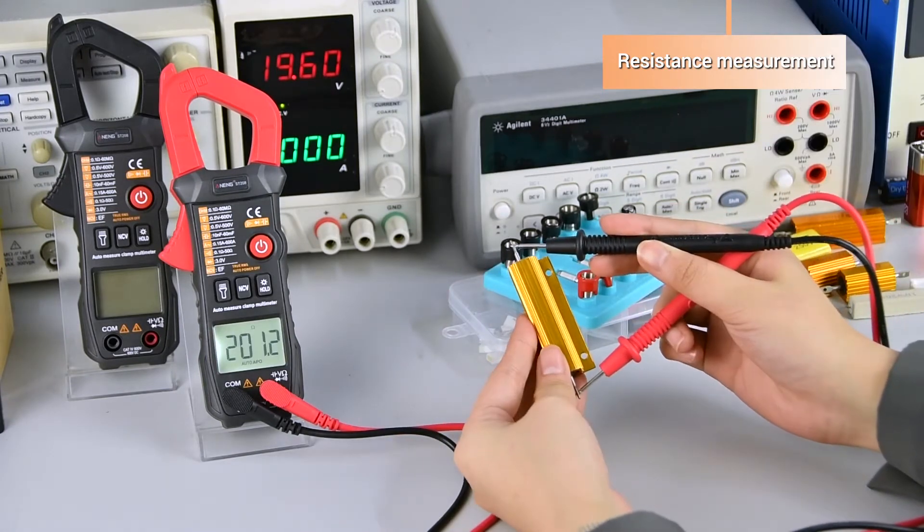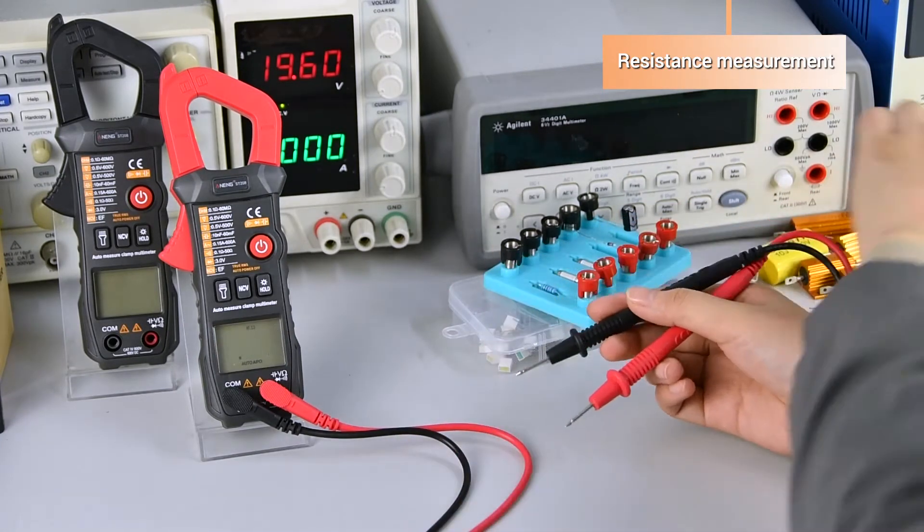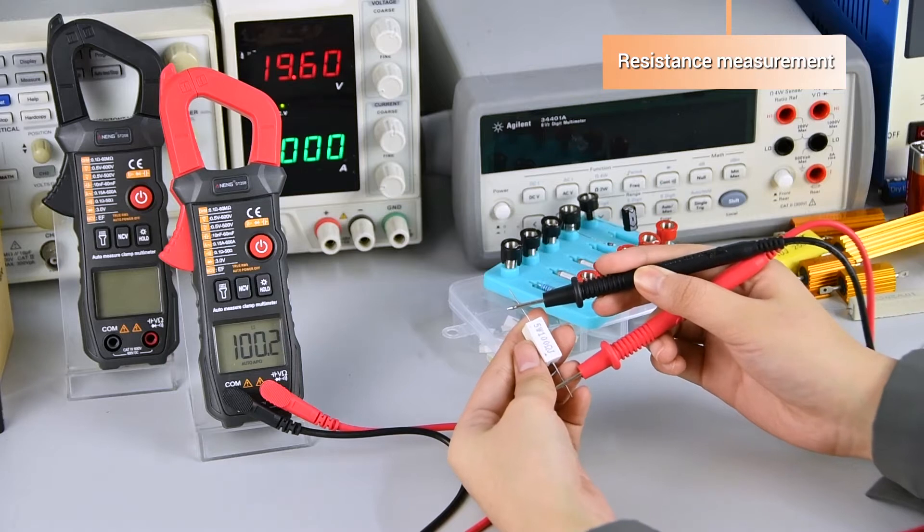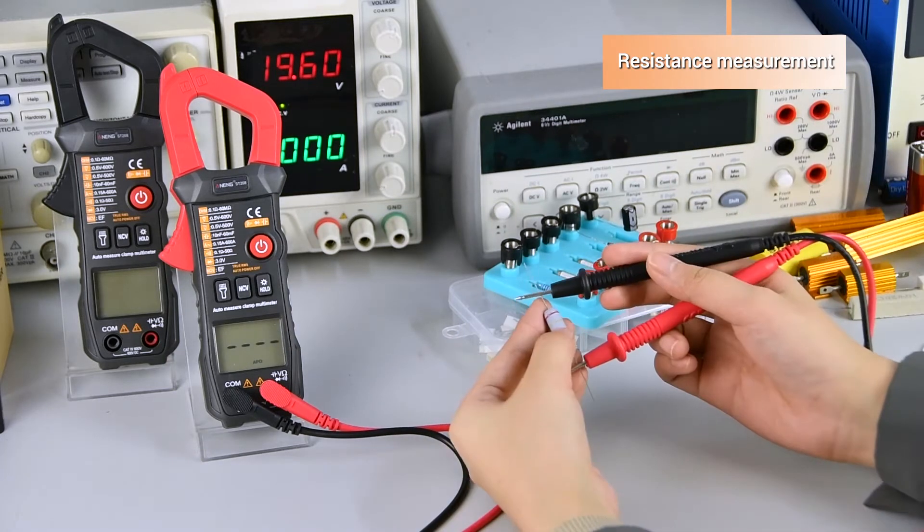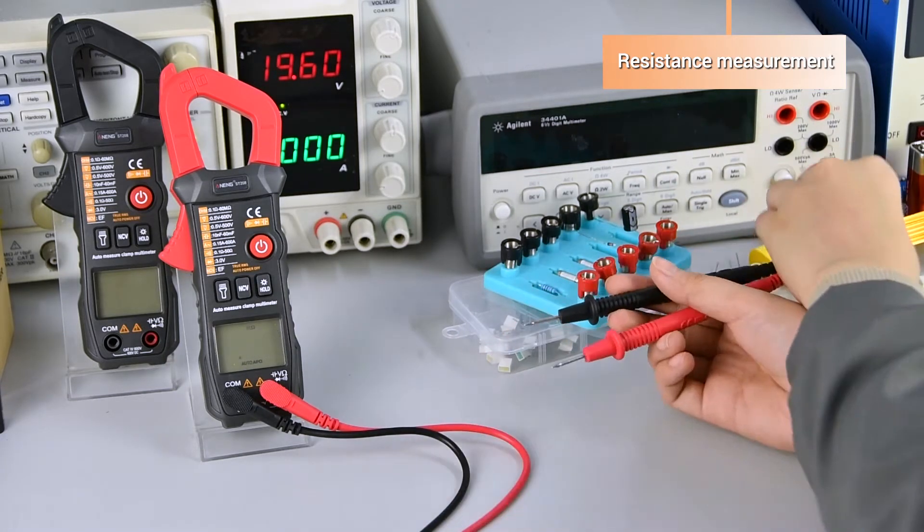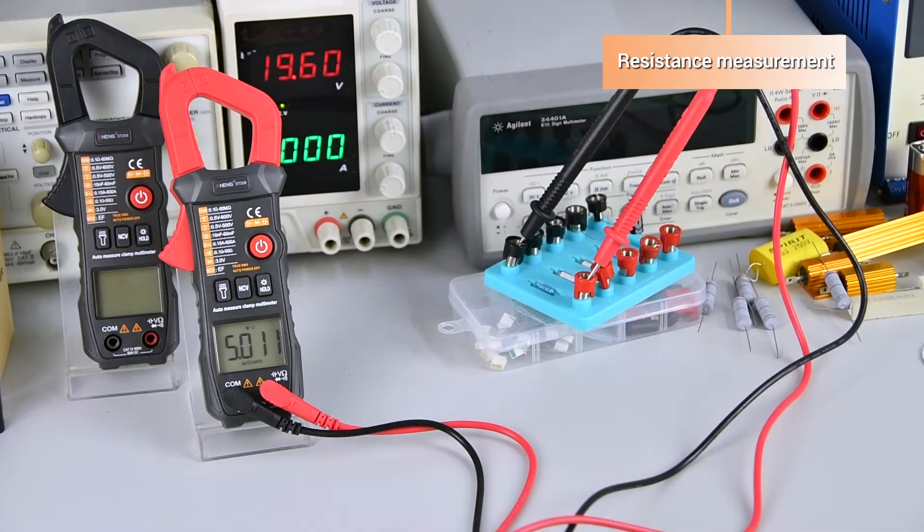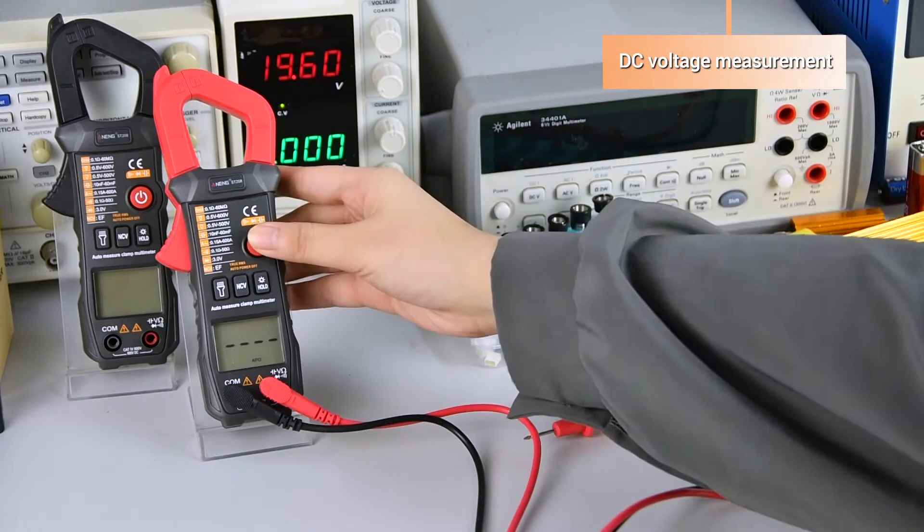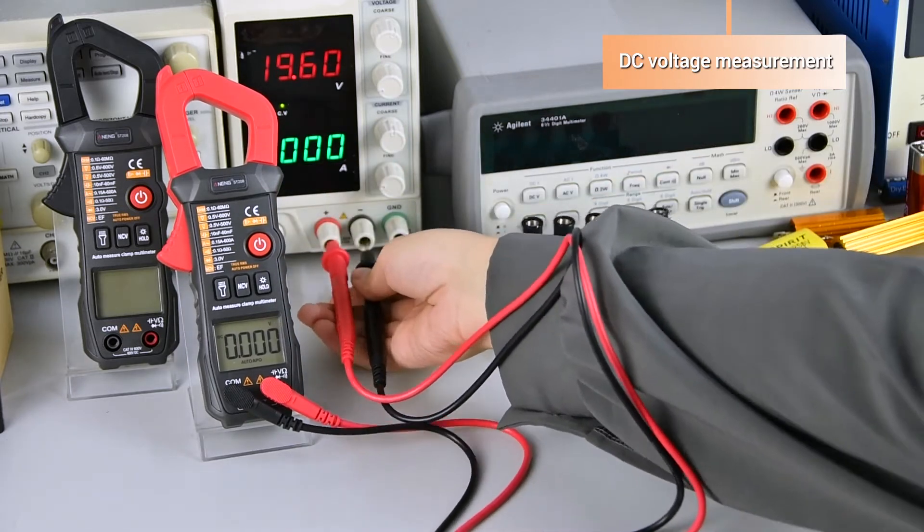Resistance measurement: place the stylus on both sides to measure. DC voltage measurement.